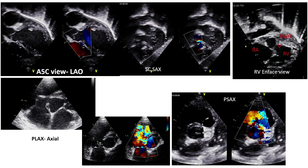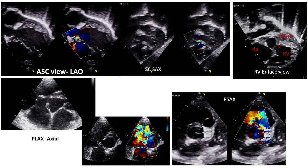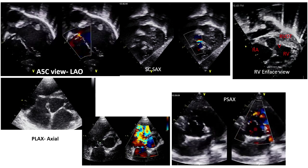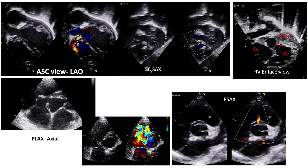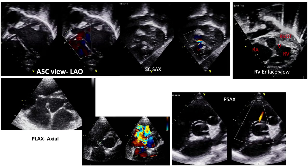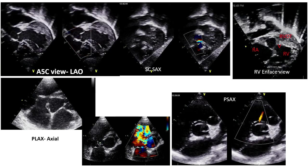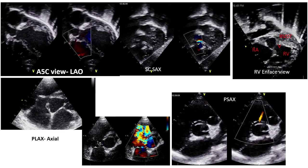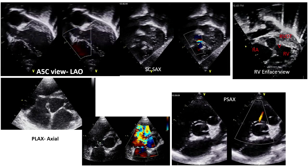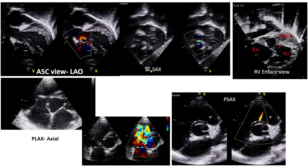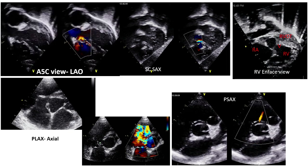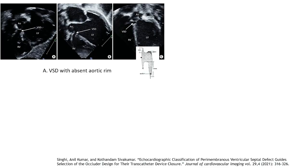Echo is the primary investigation to evaluate whether to wait or to close, and which modality to prefer. We assess the number and size of the VSD, the surrounding morphology, the distance from the aortic valve, the condition of the tricuspid valve, and any tricuspid regurgitation — and then we take the decision.